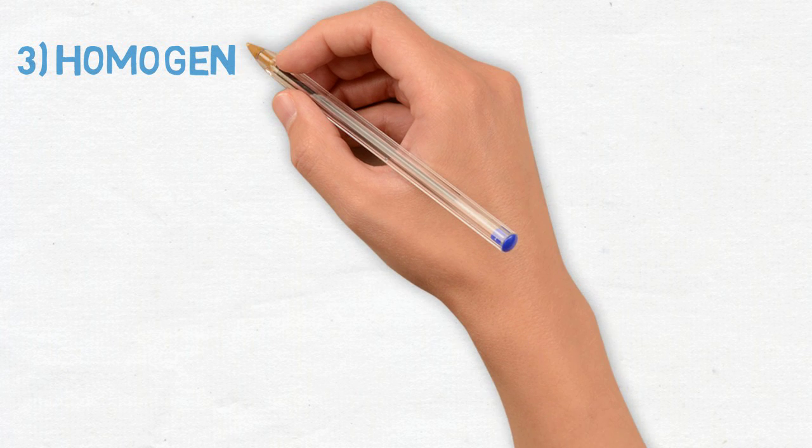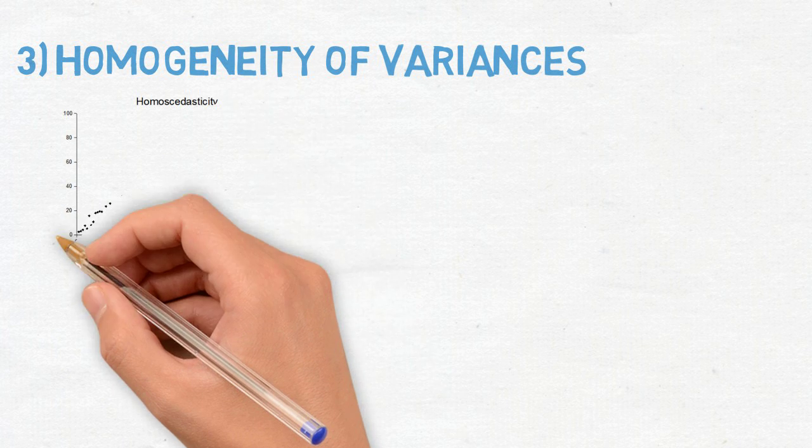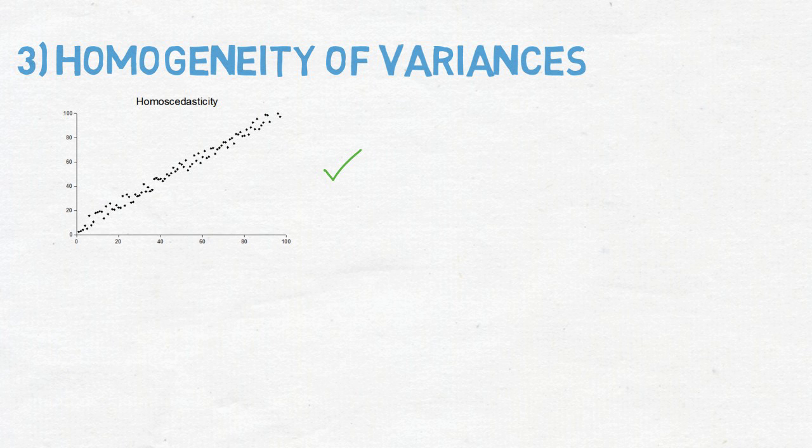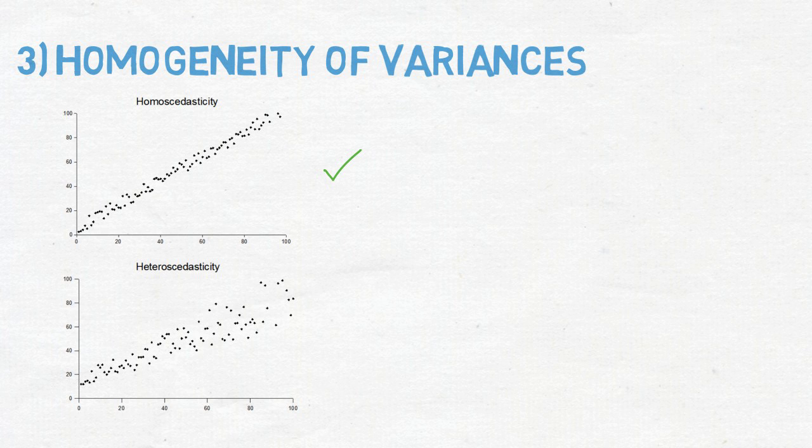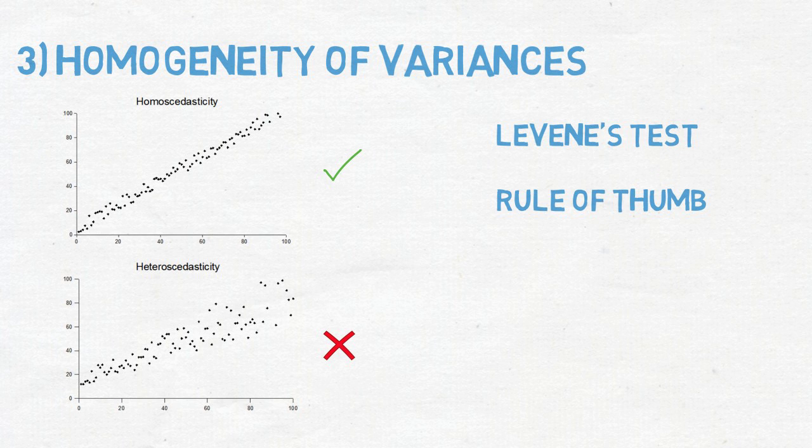Homogeneity of variances or homoscedasticity means that the variance and the standard deviations of the residuals are equal for each group. Since we use pooled standard deviations to estimate the spread of the residuals in each group, when the differences between standard deviations are large, a single pooled standard deviation does not accurately reflect every group and therefore produces inaccurate results. To test for this statistically, you can use Levene's test or rule of thumb which says that the largest standard deviation should be smaller than twice the smallest standard deviation.